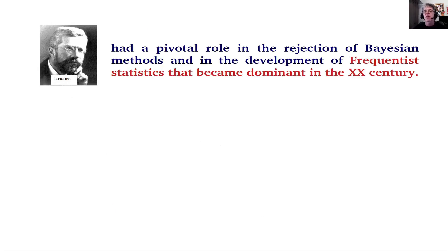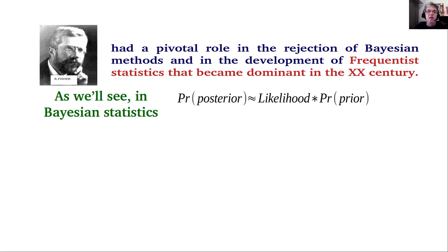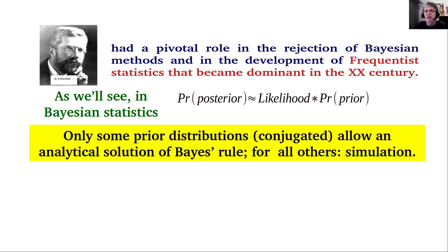Ronald Fisher had a pivotal role in the rejection of Bayesian methods and in development of frequentist statistics that became by far the dominant viewpoint during the 20th century. As we will see in coming videos in full detail, this is the basic estimating equation used in Bayesian statistics. At the right, we see the prior, which is the probability that a given parameter has a certain set of values. This prior distribution reflects our knowledge about a given parameter before actually seeing the data. At the time of the 1920s and 1930s, only certain prior distributions, known as conjugate prior distributions, allowed an analytical solution of Bayes' rule.